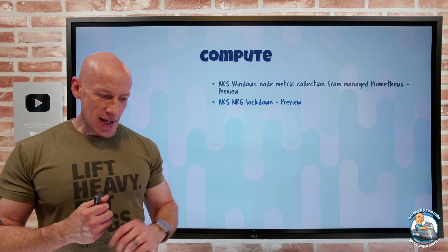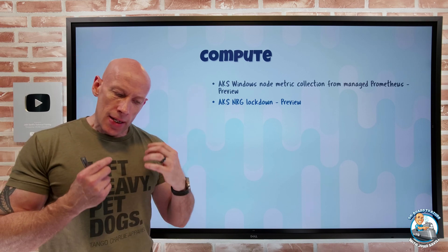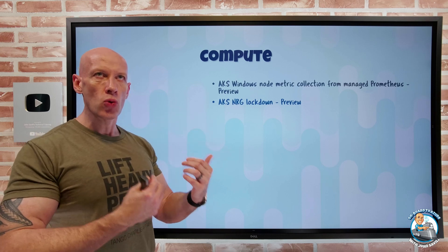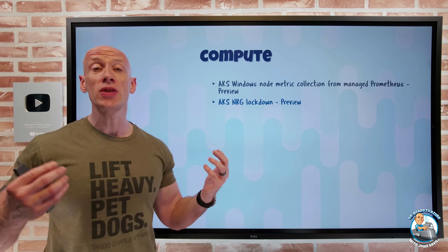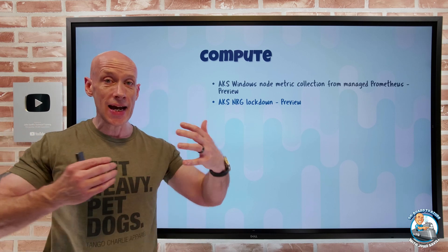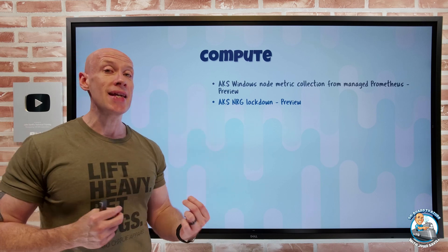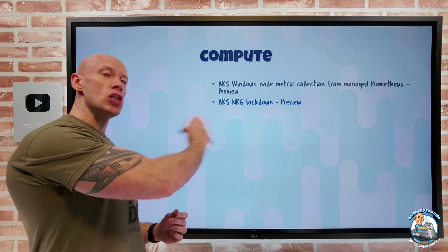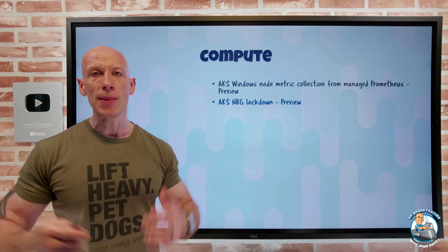Also for Azure Kubernetes Service, there's a new node resource group lockdown in preview. Normally with AKS, the virtual machine scale sets that power the node pools are deployed to a resource group where you can see and interact with them and potentially cause damage. This feature adds a deny assignment to that resource group containing the node pool to stop you from messing with it. It forces you to make changes through the correct mechanism — the AKS control plane. Once it hits GA, this would probably be recommended for most environments.